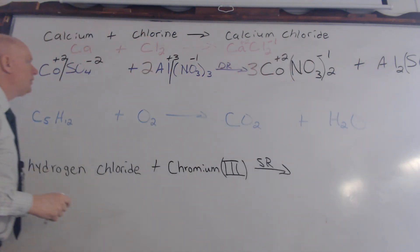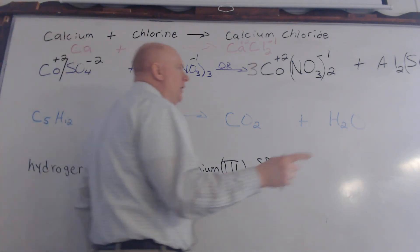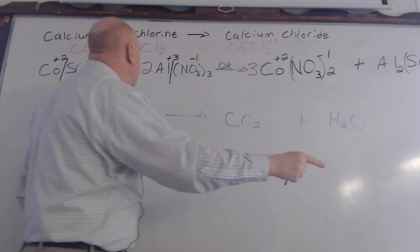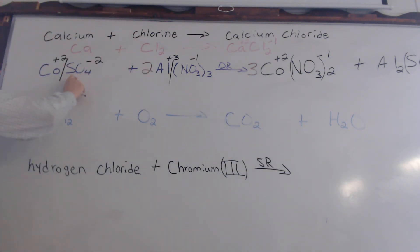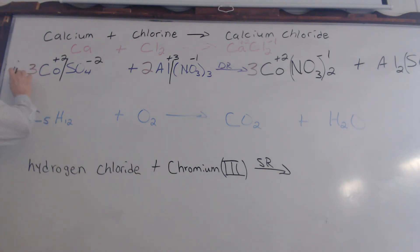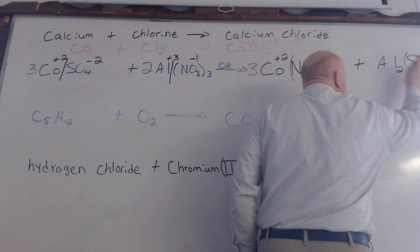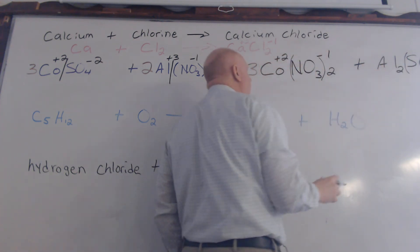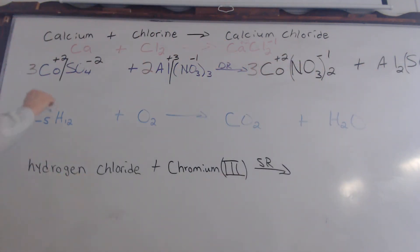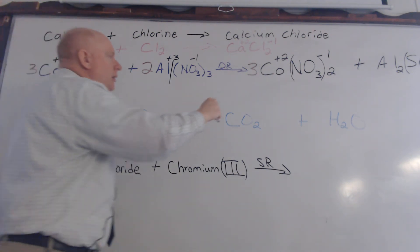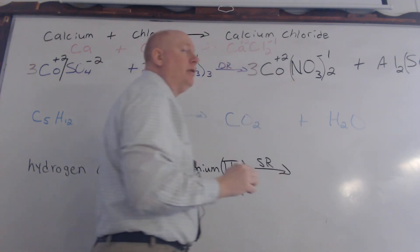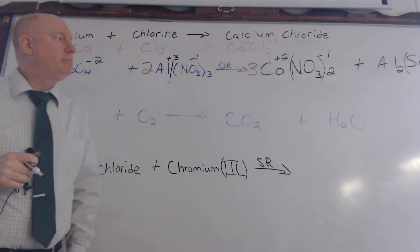Let's look at our sulfates. How many sulfates are on the product side? Three. How do we get three sulfates on the reactant side? If we put a three there — three times one for sulfate is three on each side. How many cobalts? Three times one gives three on each side. So is that balanced now? Yes, it is.